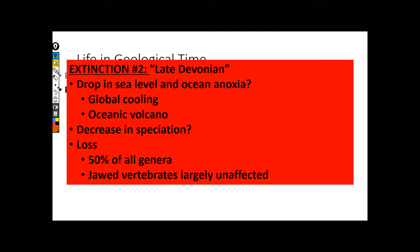So a lot of the diversity that we have in fishes comes from this particular period. This is where our fishes are coming from: late Devonian, apocalyptic volcanoes.